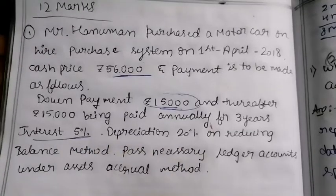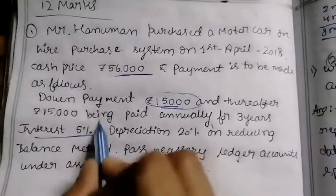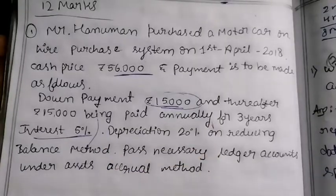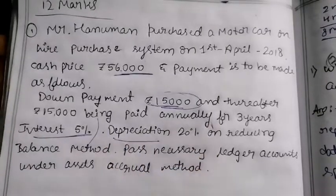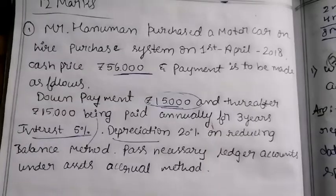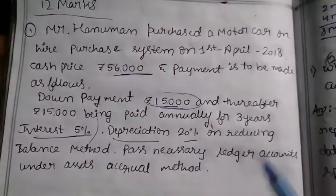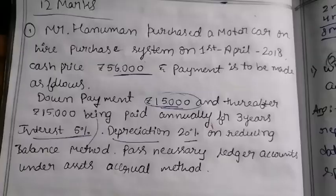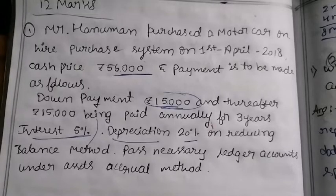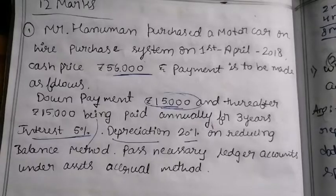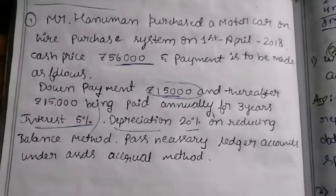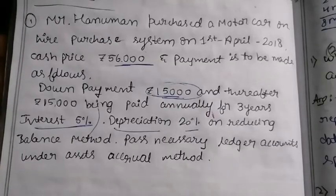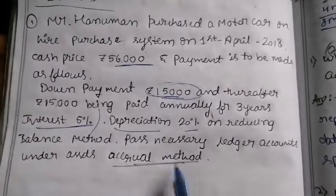Interest rate is 5%. Depreciation is calculated at 20% on the reducing balance method. We need to pass necessary ledger accounts using the accrual basis method.